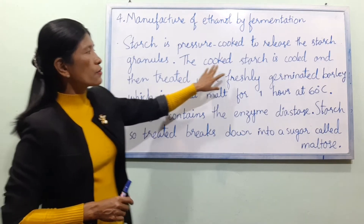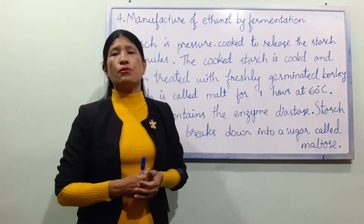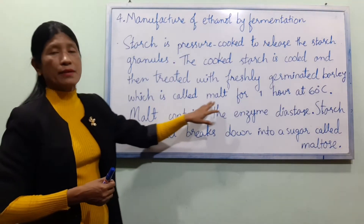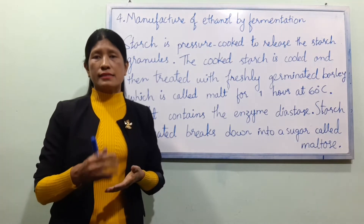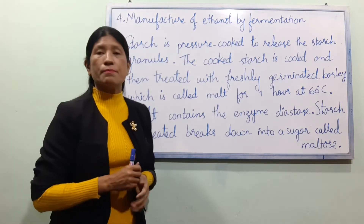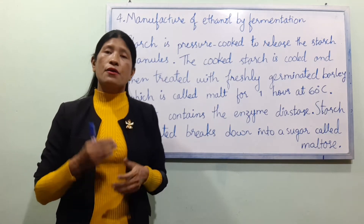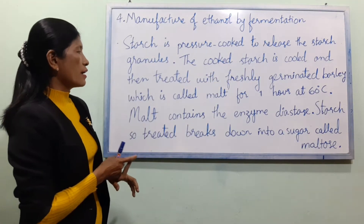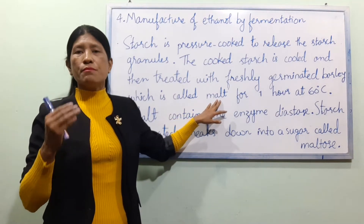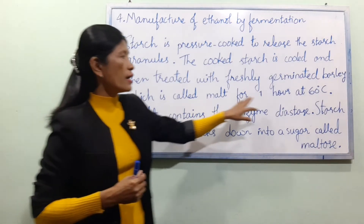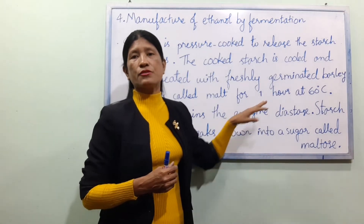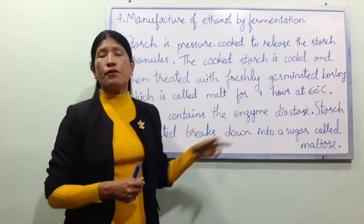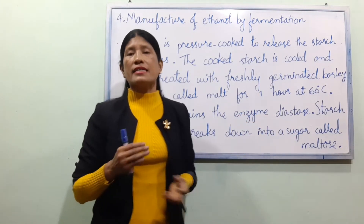The cooked starch is cooled, then the starch granules are treated with freshly germinated barley, which is called malt, for one hour at 60 degrees Celsius. Malt contains the enzyme diastase.